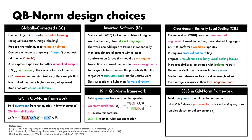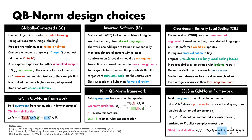CSLS can also be interpreted within the QB norm framework. We build the query bank from all available queries — the more, the merrier. We use p-hat-j to denote the probe vector restricted to the k query bank samples closest to the gallery sample gj, and s-hat-q to denote the unnormalised similarity vector sq restricted to the k gallery samples closest to the query. We then obtain QB norm similarities as follows, where the term in blue accounts for average similarity in the local neighbourhood of query sample q, and the term in green accounts for the average similarity in the local neighbourhood of gallery sample j. As with the inverted softmax, CSLS does have a hyperparameter — the neighbourhood size k — however, in practice, performance is relatively insensitive to its value, and cross-validation is not essential.